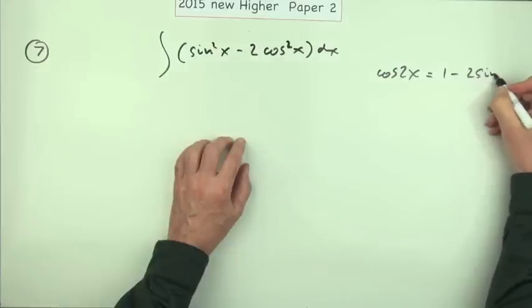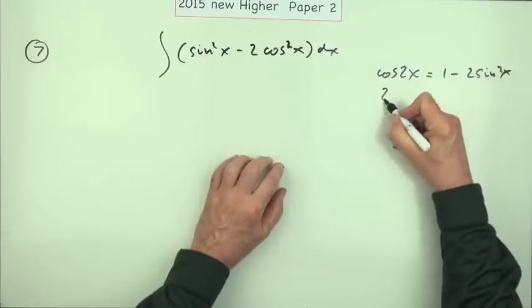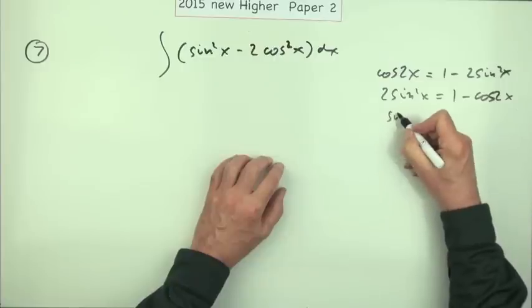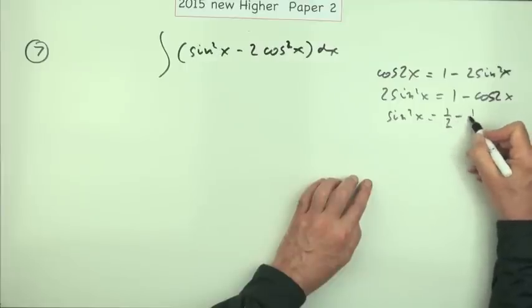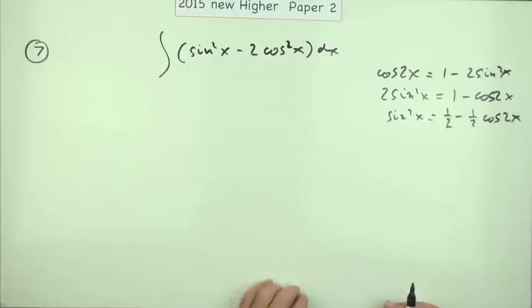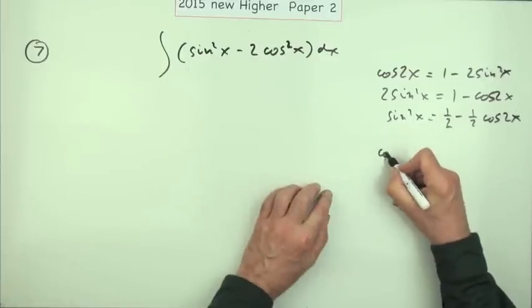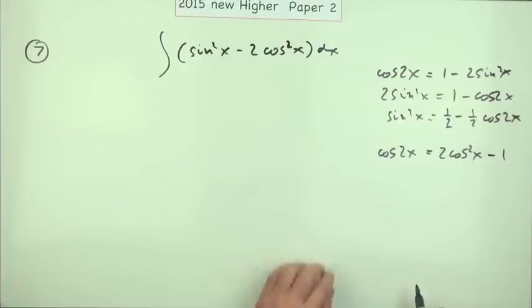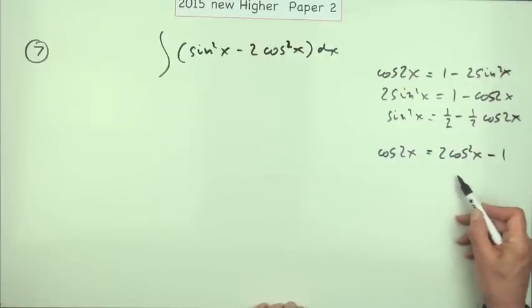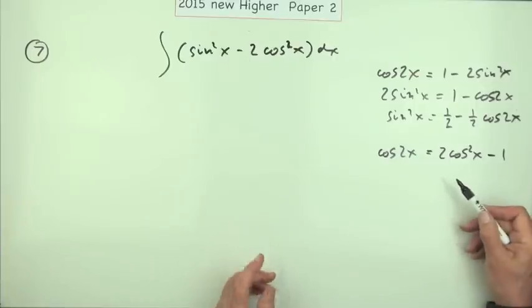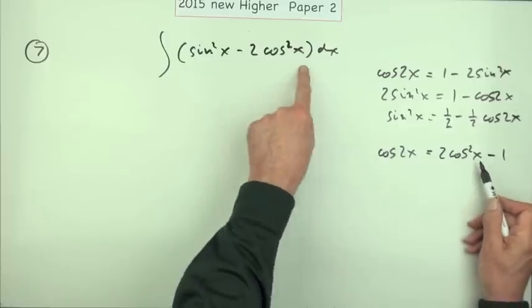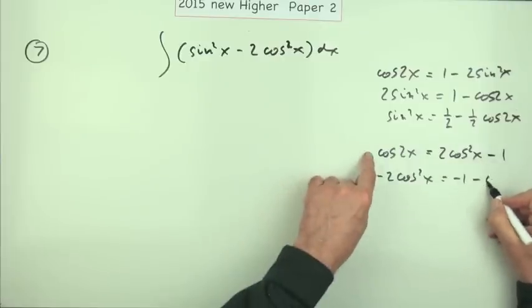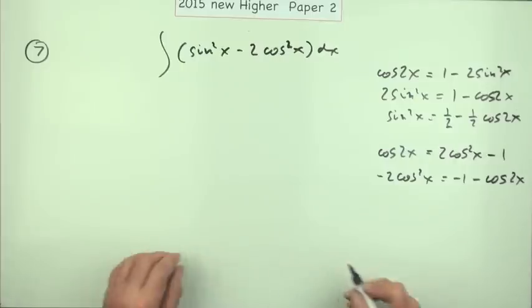You'd say, well, sin squareds come from cos 2x. Cos 2x is equal to 1 minus 2 sin squared x, and I could rearrange that to read this: cos 2 sin squared x would be 1 minus cos 2x, so sin squared x would be, halving it, a half minus a half cos 2x. I'd replace that one. Sum of the cos squares I can get that from a double angle. Cos 2x is 2 cos squared x minus 1, and then instead of just rearranging that to read cos x equals and then multiplying it by negative 2, which you could do because I'm just going to substitute it, I could just say, well, I can just get that. It's more or less what I want there. So if I take that across, negative 2 cos squared x would be negative 1 minus cos 2x. And there's my two substitutions.